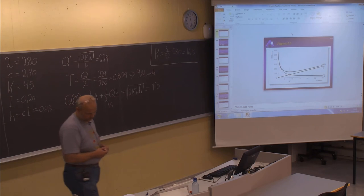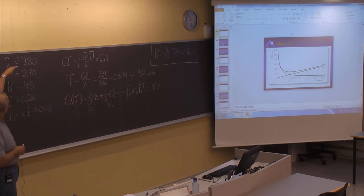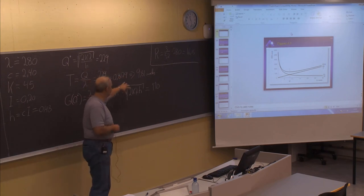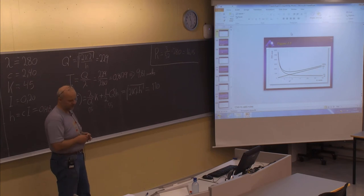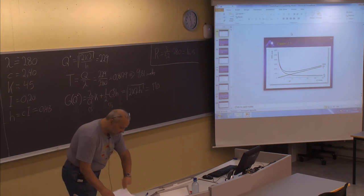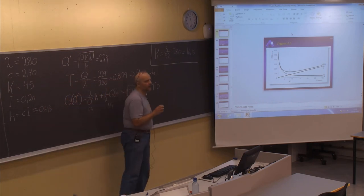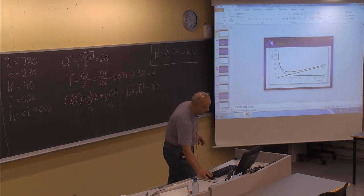This was a quite simple example showing: read through the text, find the values for all parameters, calculate the optimal order size, and then find the cost and the cycle time according to this optimal order size. Now let's have a look at what will happen when you have a finite production rate — when you are producing yourself instead of buying from another vendor.